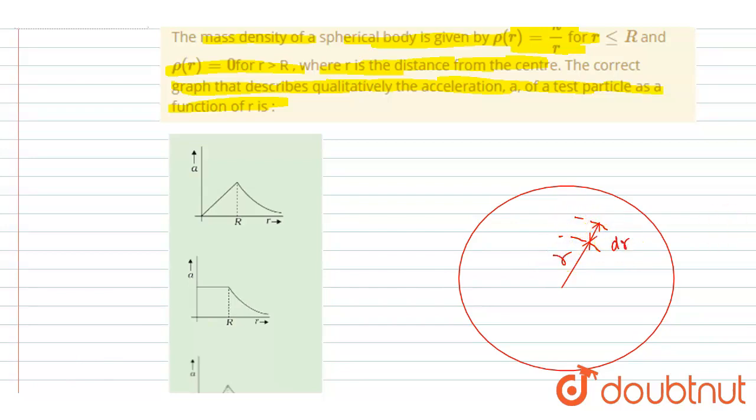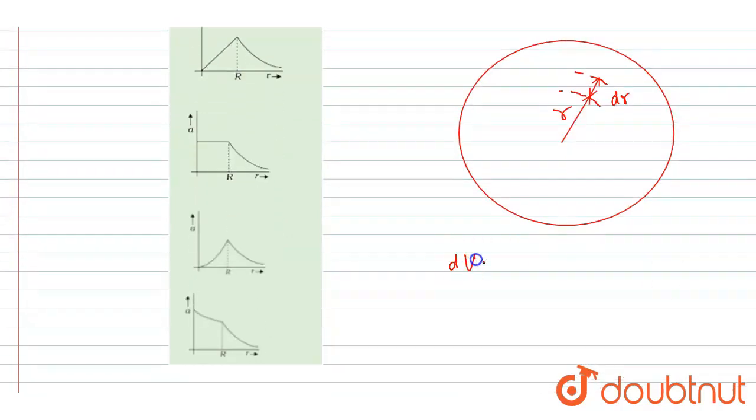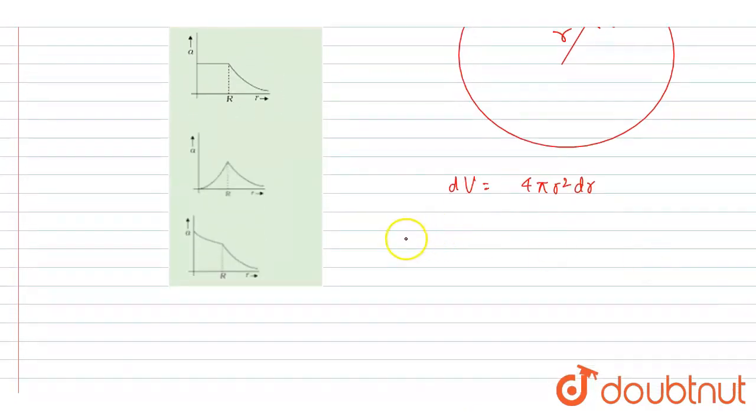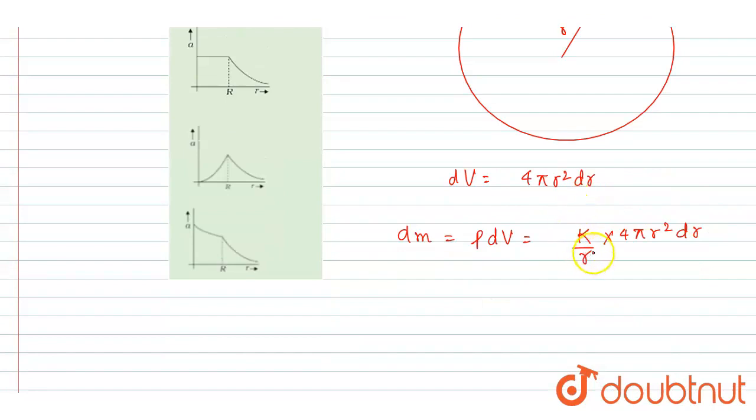...we can get the mass of it because we know that the density is varying with r like k by r. So ρ equals k by r. The volume of this dr thickness shell, it is equals to 4πr²dr. And if you multiply it with ρ you will get the mass. It is k by r, so this will get cancelled out. You will get 4πkrdr. From here you will get the mass by integrating it.